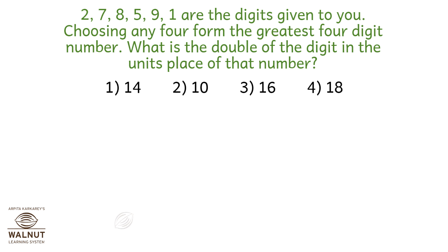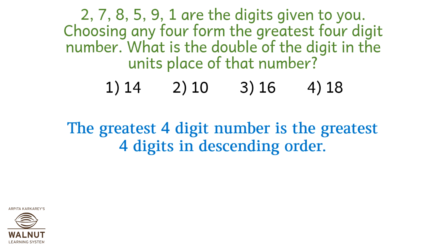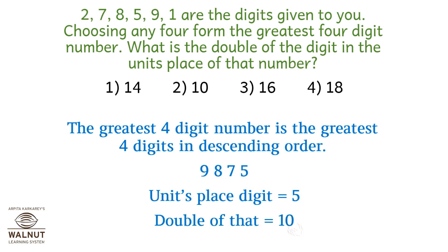From digits 2, 7, 8, 5, 9, 1 — choosing any 4 — form the greatest 4-digit number. What is double the digit in the units place of that number? The greatest 4 digits in descending order are 9, 8, 7, 5. Units place is 5; double of that is 10. So option 2 is correct: 10.